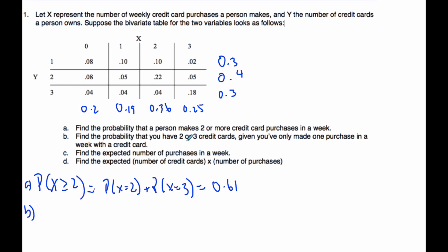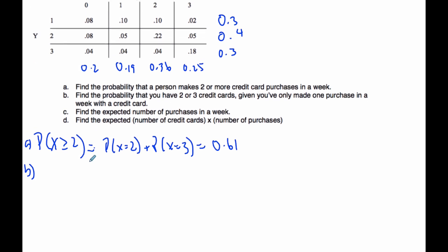Part B says find the probability that you have two or three credit cards given you've only made one purchase in a week with a credit card. That's find the probability that Y equals 2 or Y equals 3 credit cards, given that X is one purchase. I'm only looking at this column here. My total is 0.19. The probability of two or three credit cards is 0.09, and that works out to 0.474.